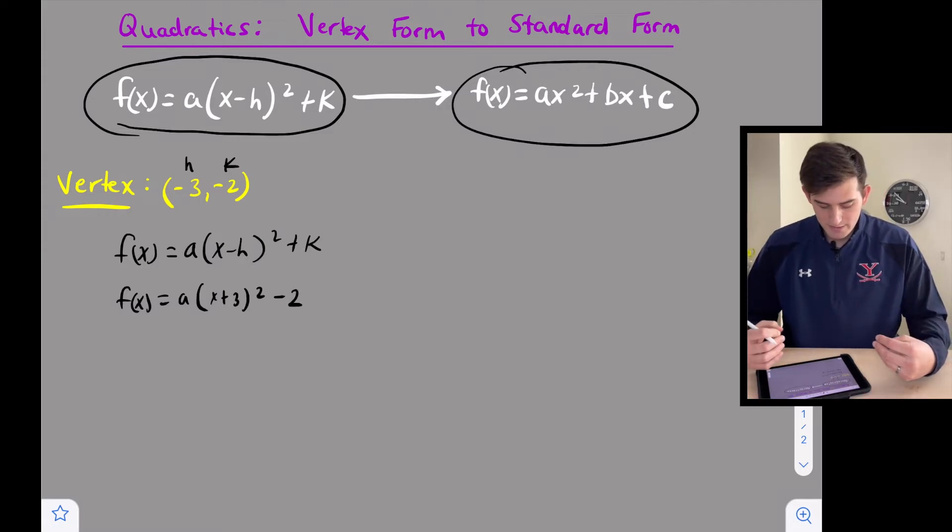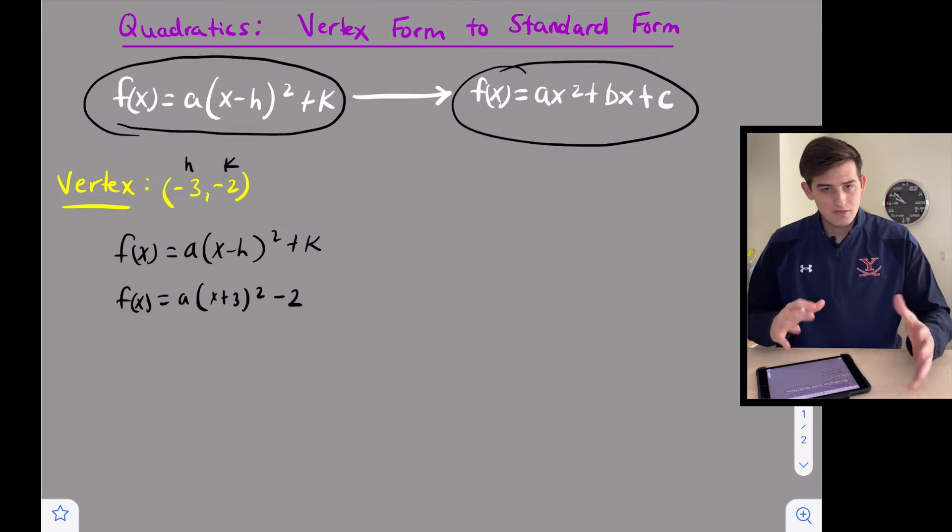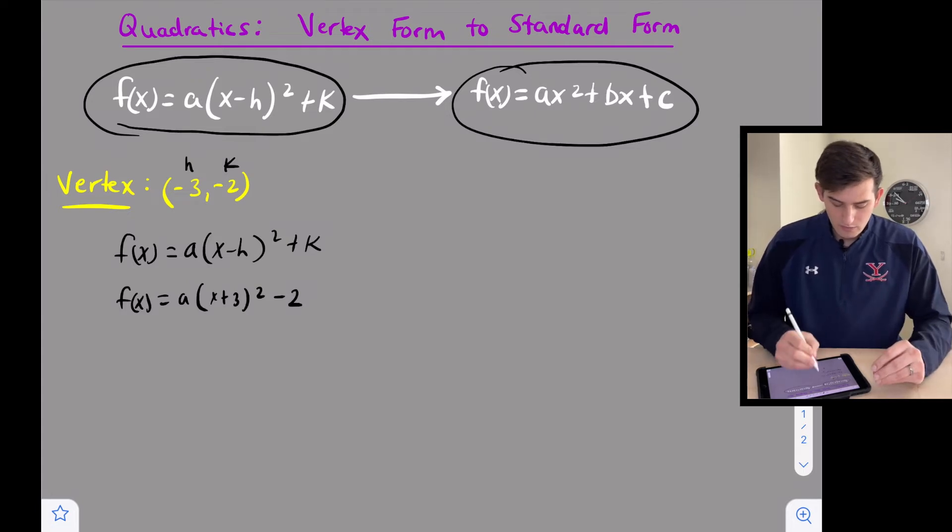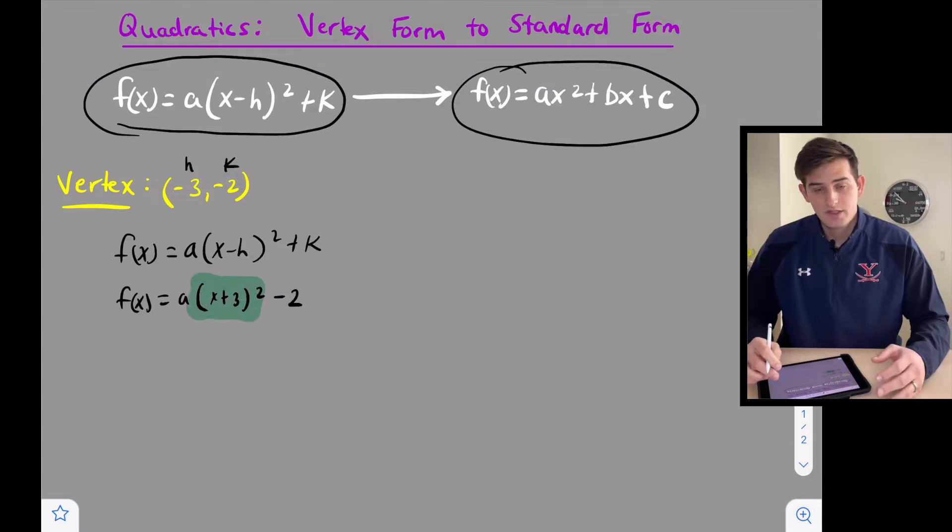Now when we simplify this let's leave a just a for right now. We'll talk about a in just a second. But look what we have right here in the middle. We have the square of a binomial. So if you remember from previous videos this factors as what we call a perfect square trinomial.